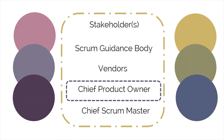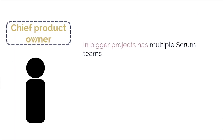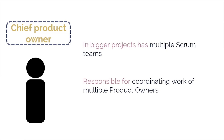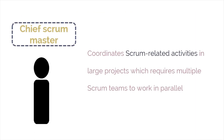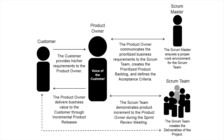The chief product owner is another non-core role, relevant for large projects that have multiple Scrum teams. The chief product owner is responsible for coordinating the work of multiple product owners. The last non-core role is the chief Scrum master, who is responsible for coordinating Scrum-related activities in large projects that may require multiple Scrum teams to work in parallel. A diagram here summarizes the roles and their interrelations, and how each contributes to fulfilling customer requirements.